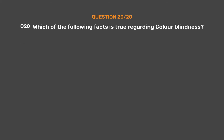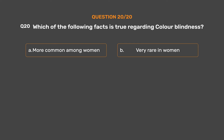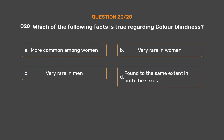Question number 20. Which of the following facts is true regarding color blindness? Option A: More common among women. Option B: Very rare in women. Option C: Very rare in men. Option D: Found to the same extent in both the sexes. The correct answer is Option B, very rare in women.